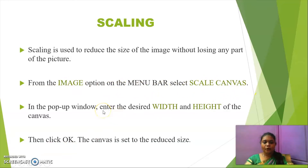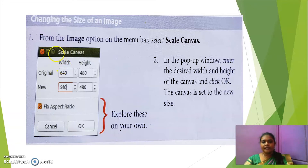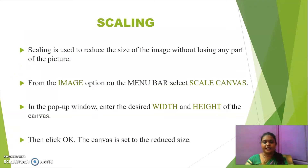To scale, from the Image option on the menu bar we have to select Scale Canvas. A Scale Canvas dialog pop-up box appears. In that, the original width and height of the image will be displayed. Under the New fields, you can type the new size you want the image to be, then click OK. The edited image will appear on your screen. This is called scaling — reducing the size of an image without losing any part of it.